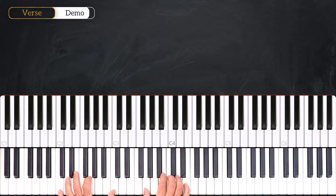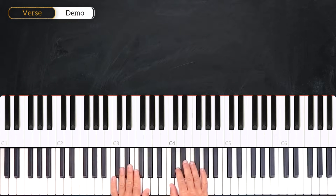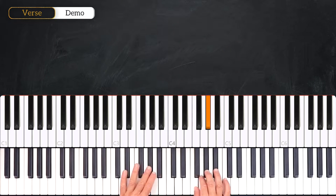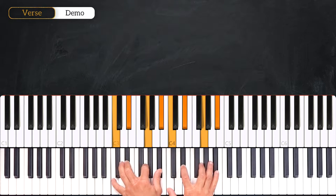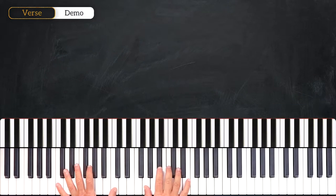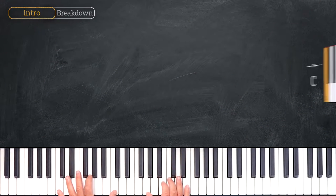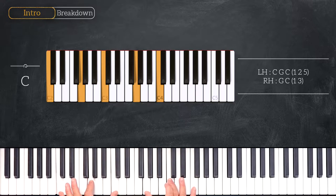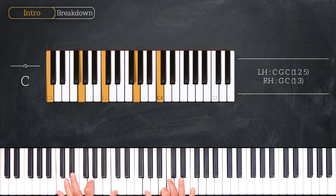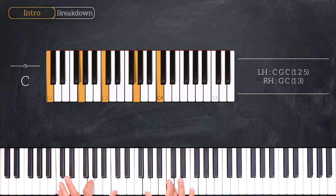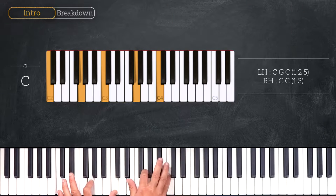In this first part we are going to learn the introduction and the verse. We are in the key of C minor, so we'll start on the first degree of the scale playing this C chord. We play C, G, C on the left hand and G, C on the right hand. Note that we do not use a third in this chord, but we are still in the key of C minor — the third note would have been E-flat.